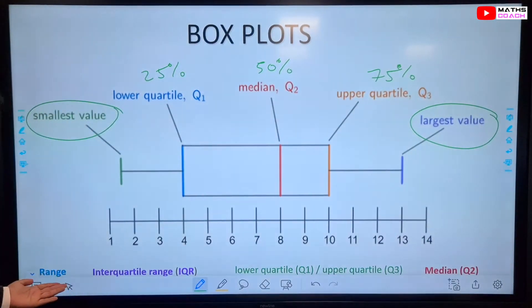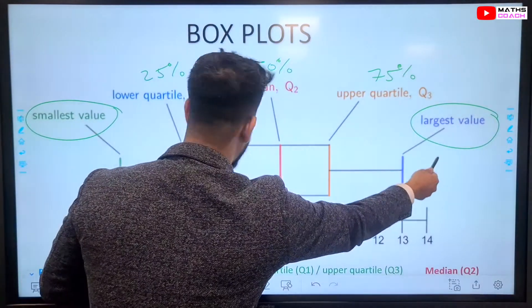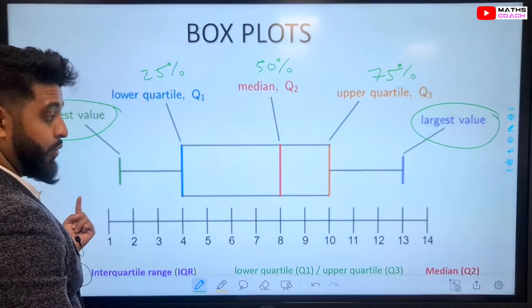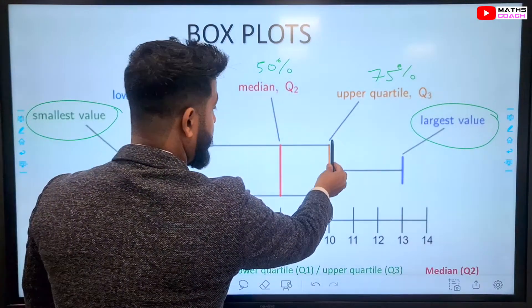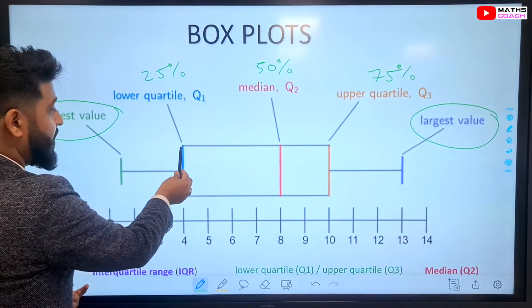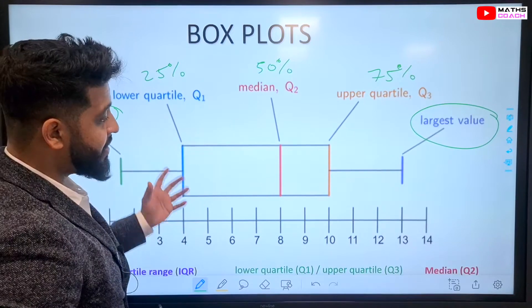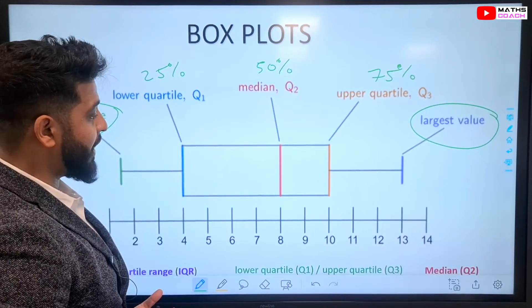You can find the range by doing the largest value take away the smallest value. And, to find the interquartile range, you'll just do the upper quartile take away the lower quartile. So, this is what a basic box plot diagram looks like.